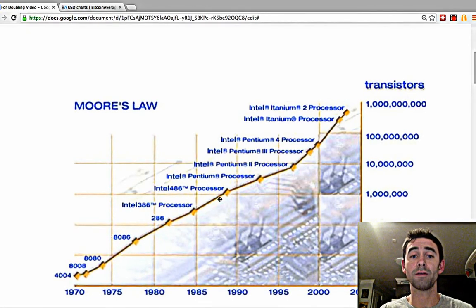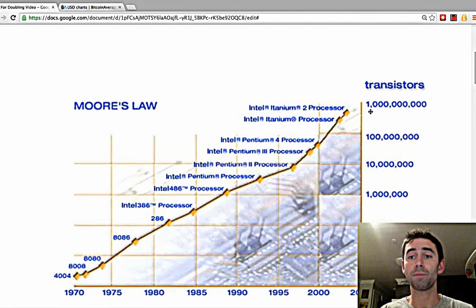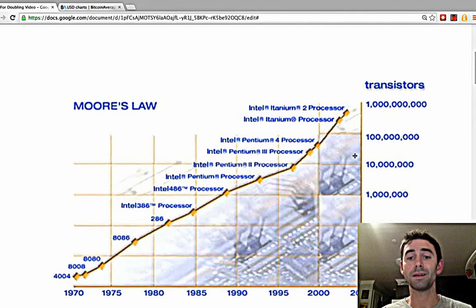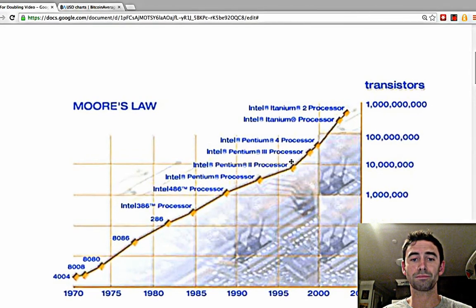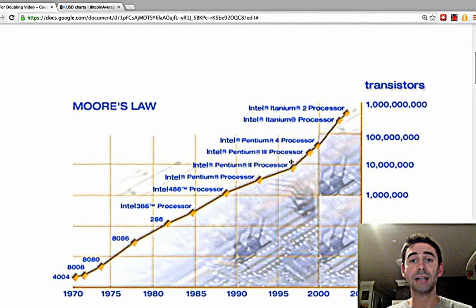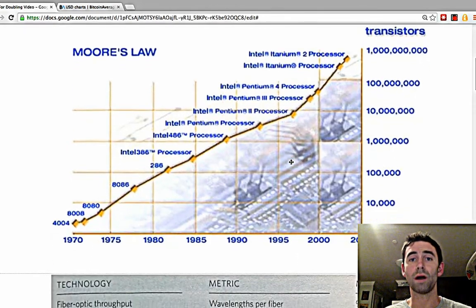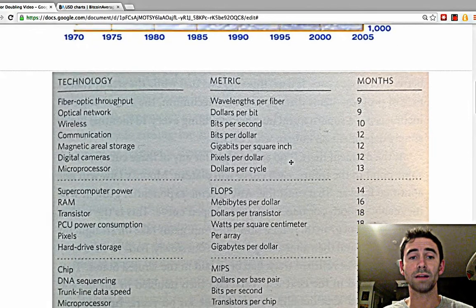When you graph the number of transistors per chip on a log scale, you get this almost straight line. Actually, a lot of technologies grow on exponential curves, so they have straight lines.